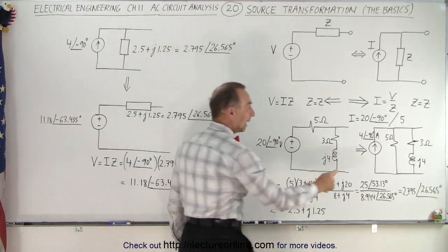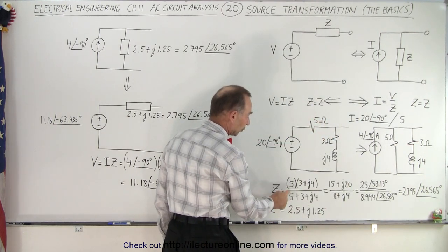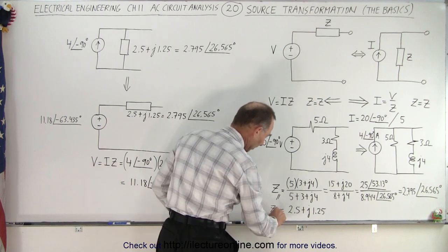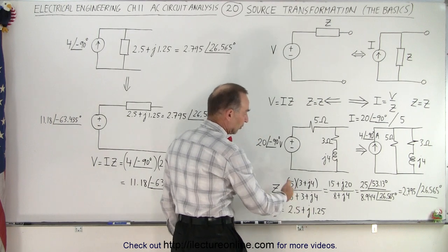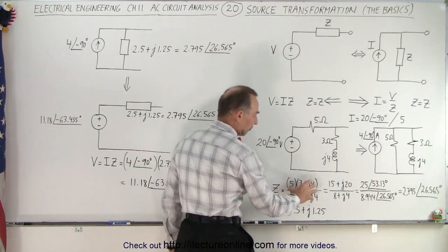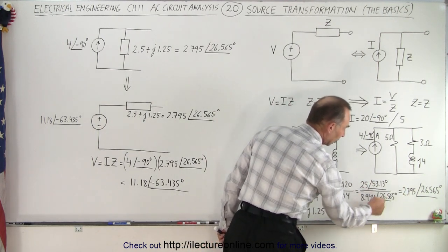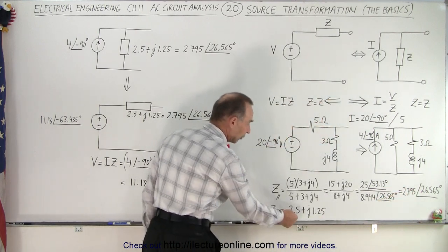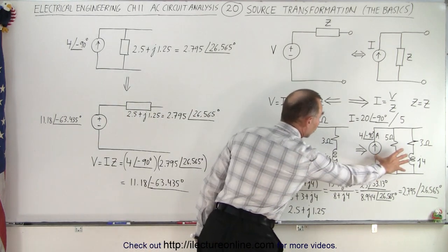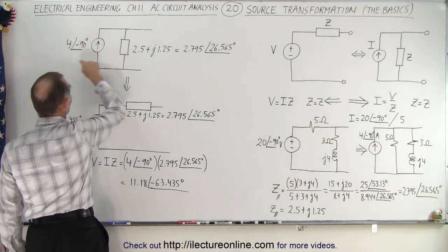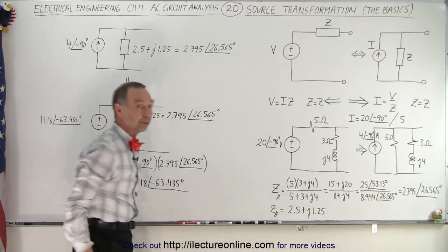Now we go ahead and take these two branches and turn them into a single impedance. We're going to use the product-over-sum rule to combine the impedance of those two branches in parallel into a single impedance. We go through the process of converting to magnitude and phase angle format, take the division, subtract the angles, then reconvert to the real and imaginary parts of the impedance. So this circuit turns into one where we still have the same current source, but now with a single impedance of 2.5 plus j1.25.